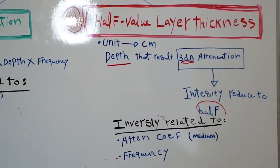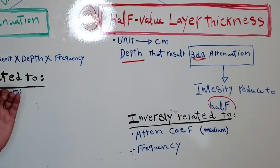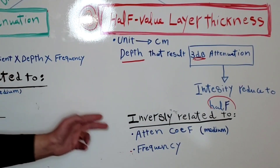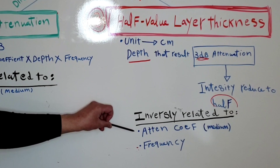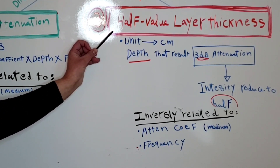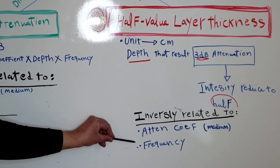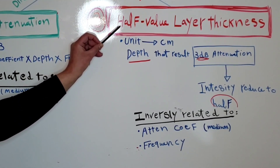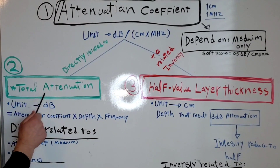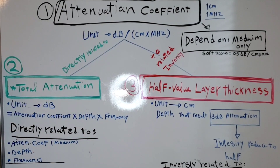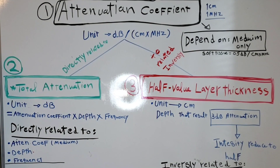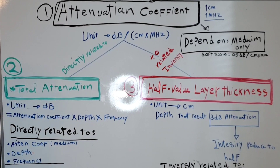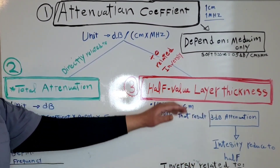Half value layer thickness is inversely related to both the attenuation coefficient and frequency. When the attenuation coefficient increases, half value layer thickness decreases; when frequency increases, half value layer thickness decreases. Therefore, total attenuation is directly related to the attenuation coefficient, while half value layer thickness is inversely related — when attenuation coefficient increases, total attenuation increases and half value layer thickness decreases.